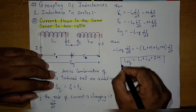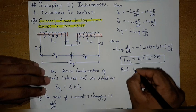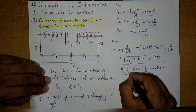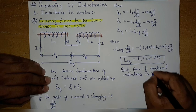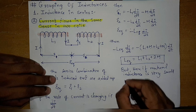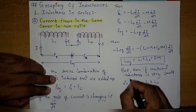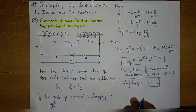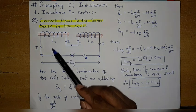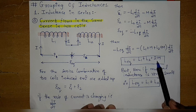After cancelling di/dt and the minus signs, the equivalent inductance is L equal to L1 plus L2 plus 2M. If the mutual inductance is very small, we can neglect it, and the equivalent inductance becomes simply L1 plus L2. So for series combination, the equivalent inductance is always the addition of all individual inductances. If mutual inductance is present, it is added up as well.